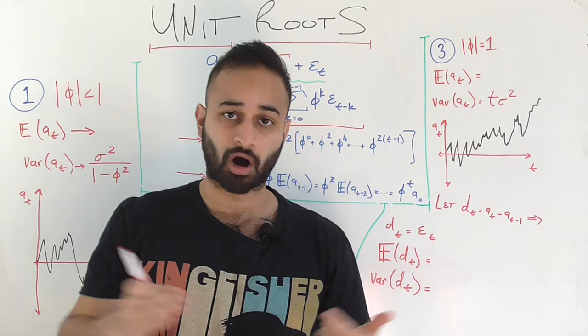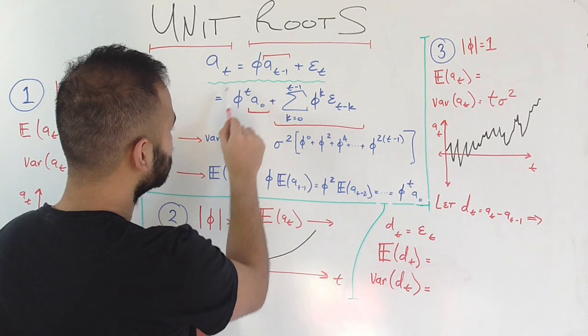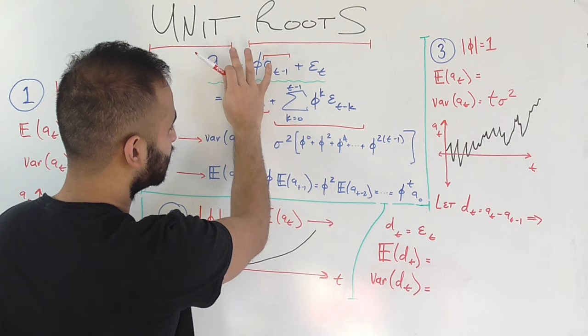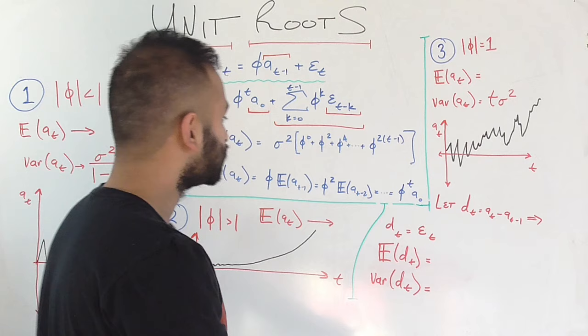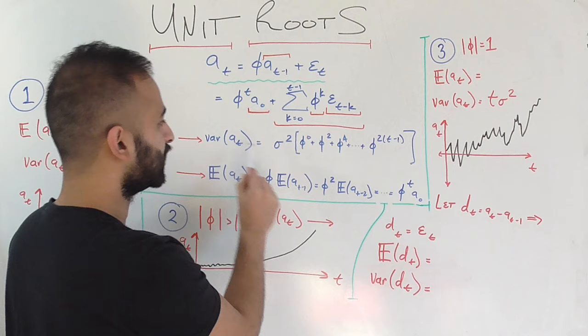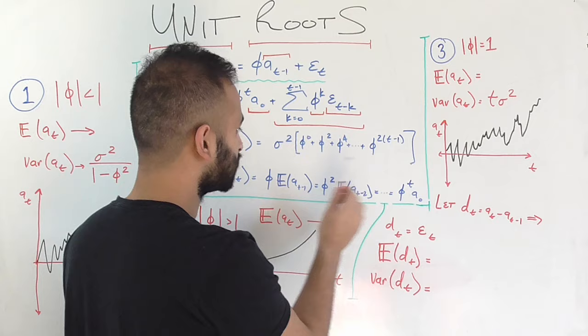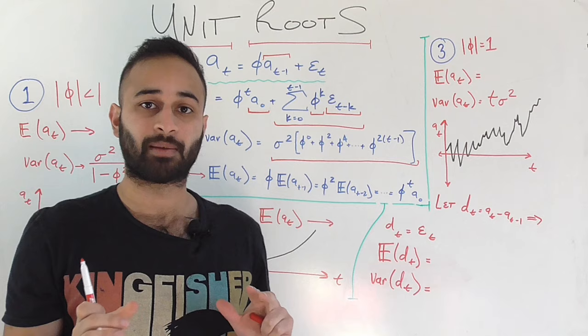The other quantity we care about is the variance, to ensure it's constant over time. Taking the variance of A_t using the MA representation: the first term is just a constant (phi^t times A_0), so it doesn't contribute to variance. The variance comes entirely from the epsilon terms. Since each epsilon has variance sigma squared, we pull that out, and the phi^k coefficients sum as: phi^0 + phi^2 + phi^4 + ... + phi^{2t-1}. So the variance of A_t at time stamp t is sigma squared times that geometric series sum.